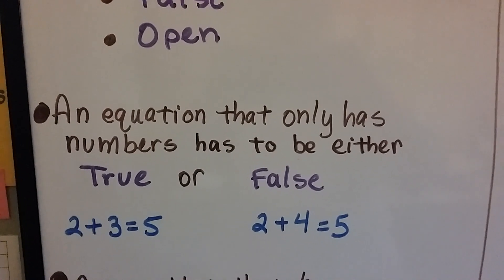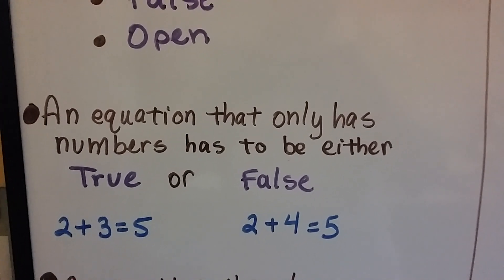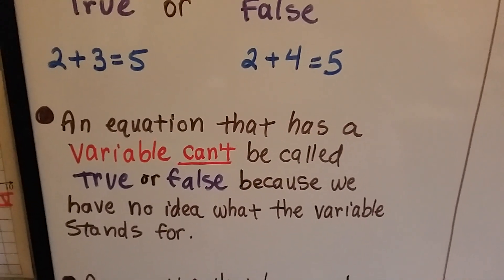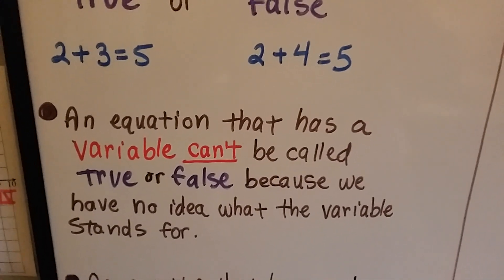2 plus 3 equals 5, that's true. 2 plus 4 equals 5, that's false. An equation that has a variable can't be called true or false because we have no idea what the variable stands for.